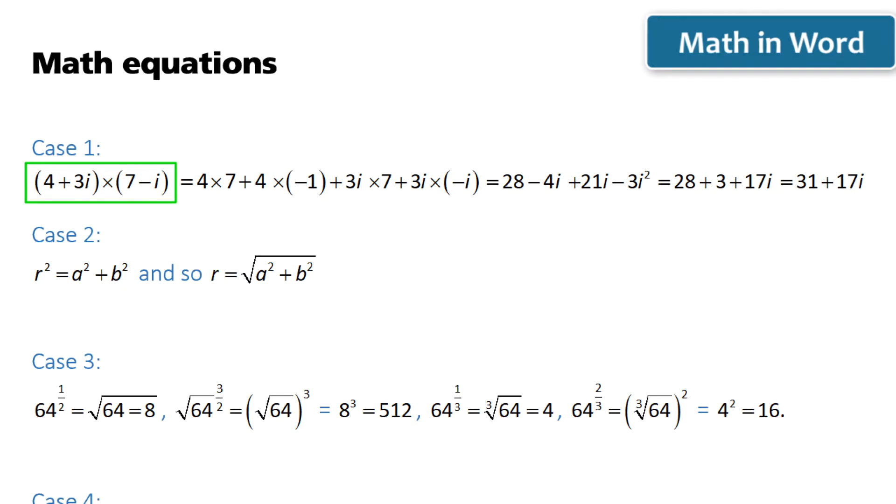Open parent 4 plus 3i close parent times open parent 7 minus i close parent equals 4 times 7 plus 4 times negative 1 plus 3i times 7 plus 3i times negative i equals 28 minus 4i plus 21i minus 3i squared equals 28 plus 3 plus 17i equals 31 plus 17i.